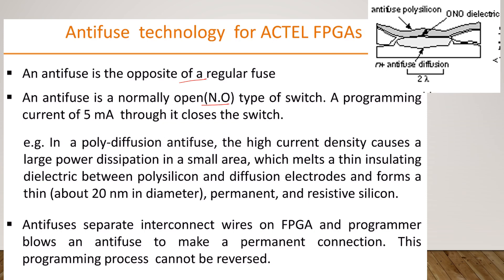The antifuse switch is normally open. Whenever you try to apply a large amount of current, or program the antifuse, it will close the switch. For example, if you take the polydiffusion antifuse, it has three layers: a bottom layer, a top layer, and in between them we have the ONO — that is, the dielectric. This ONO dielectric acts as an insulator, and the top layer as well as the bottom layer act as conductors.